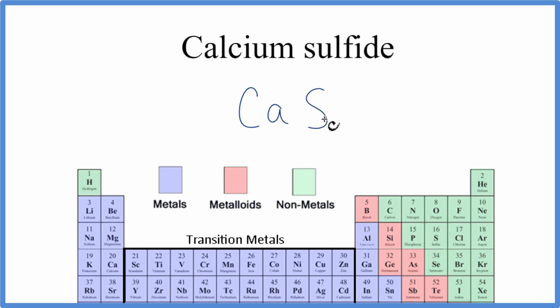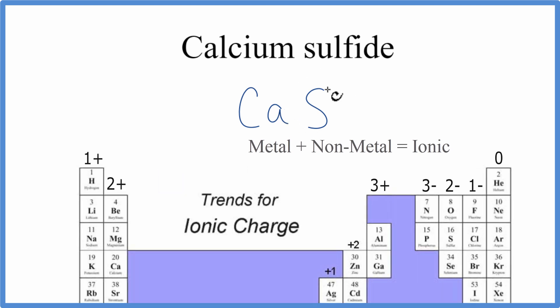So when we have a metal and a non-metal, we have an ionic compound. And when we have an ionic compound, we need to take into account the charges on each of these elements.